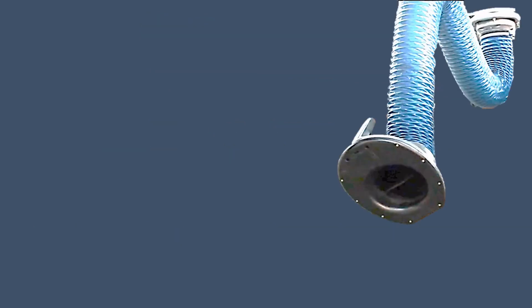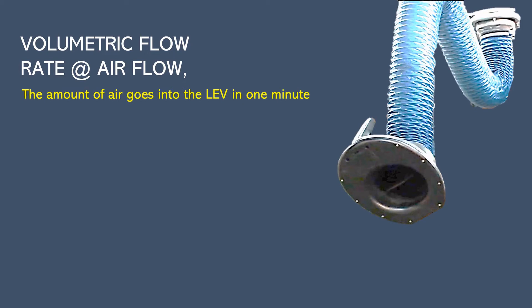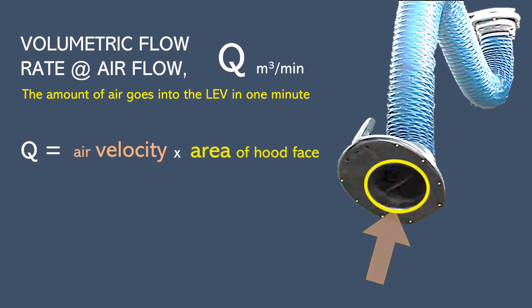Now we are going to learn how to measure the volumetric flow rate of the air that got pulled into the LEV, or what we call the airflow. The airflow is the amount of air that goes into the LEV in a minute. It's denoted by the letter Q, and the unit is cubic meter per minute. To get the airflow, we must measure first how fast the air goes through the hood, which is the velocity, and we multiply it with the area of the hood face or the opening of the hood. To simplify it, we can write it as Q equals V times A.